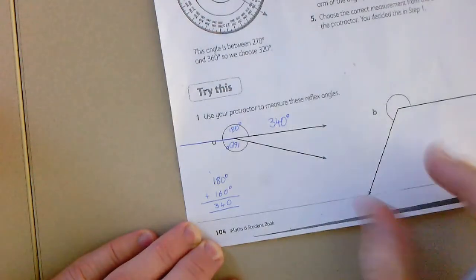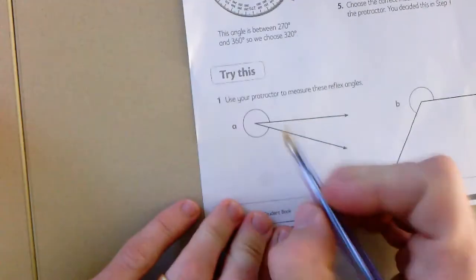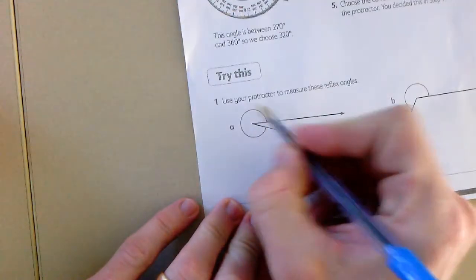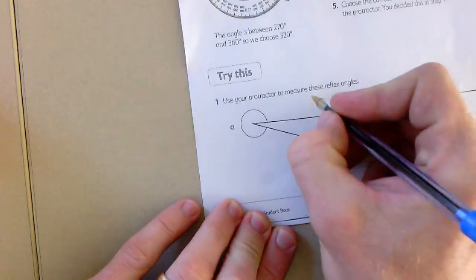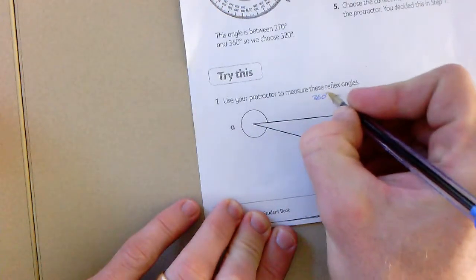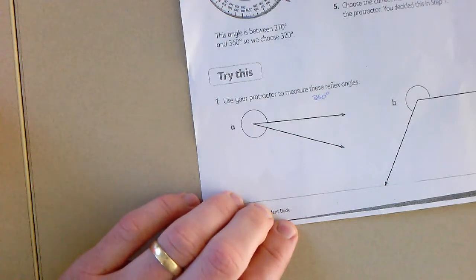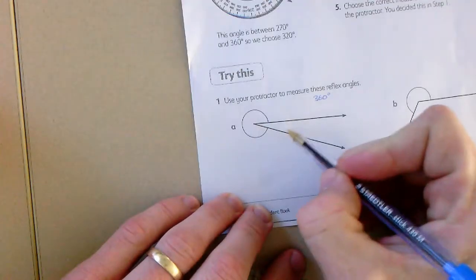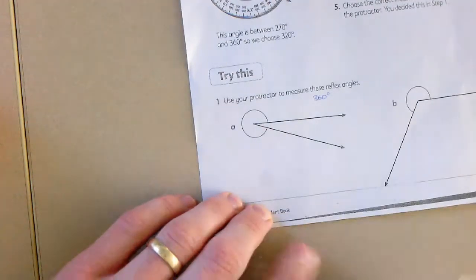There is another way to work that one out. The other way to do it is we know that if I start here and go all the way around, it would be a total of 360 degrees. So what I can do is I can just take away this small part of the angle.